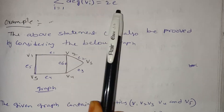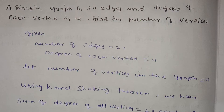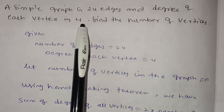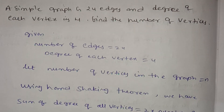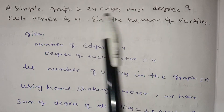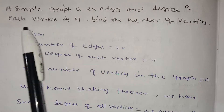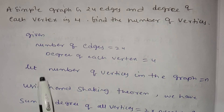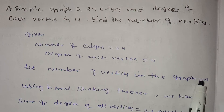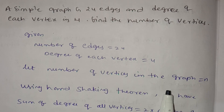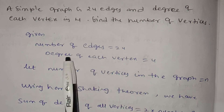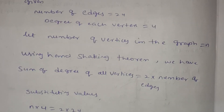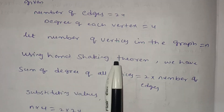Now we have a simple graph with 24 edges and the degree of each vertex is 4. Find the number of vertices. Here the number of edges is 24, and the degree of each vertex is 4. Let the number of vertices in the graph be n. Using the handshaking theorem: